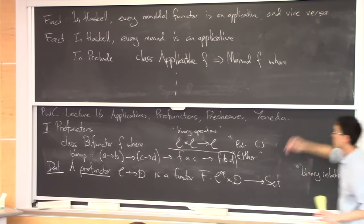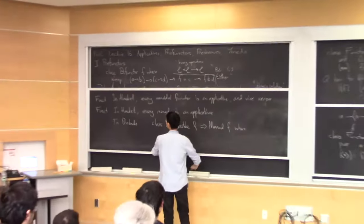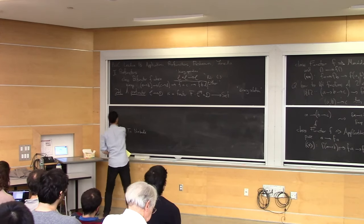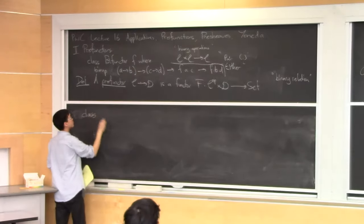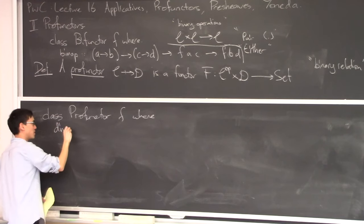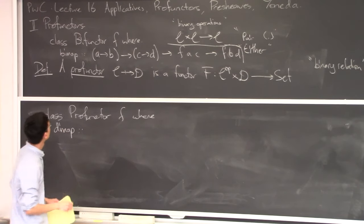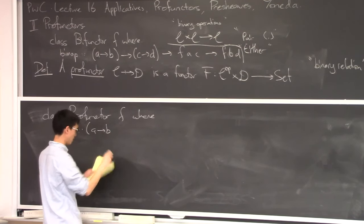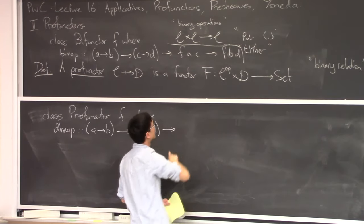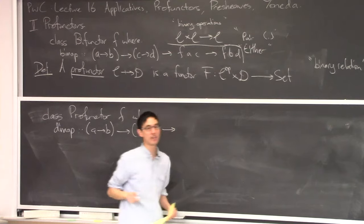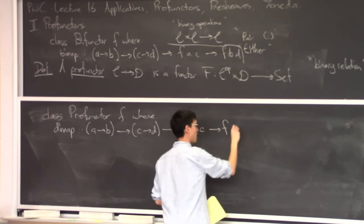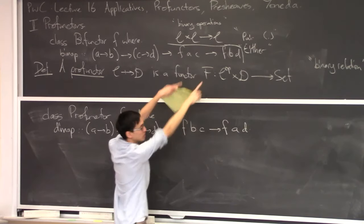The profunctor type class looks like: class Profunctor F where dimap :: (A → B) → (C → D) → F B C → F A D. This is like bimap but with contravariance in the first variable: A and B are swapped from the definition of Bifunctor.